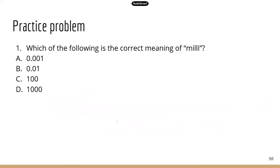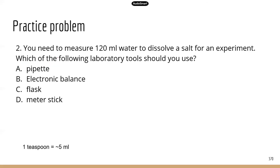I've made some practice problems. Question one: which of the following is the correct meaning of milli? Go to the prefix table — milli means one-thousandth, which is 0.001. The correct answer is A.